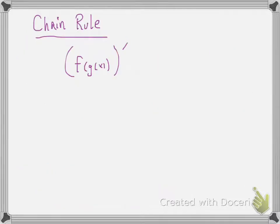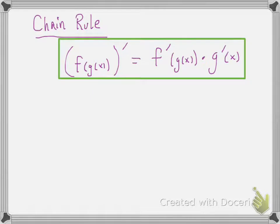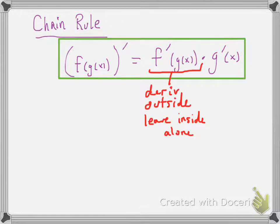Now what the chain rule tells you is how to take the derivative of a composition of functions. The derivative of f of g of x is equal to the derivative of f evaluated at g of x, times g prime of x. That first part — you take the derivative of the outside function but you leave the inside function alone. That's what f prime of g of x is saying. Then you multiply that by the derivative of just the inside piece alone.